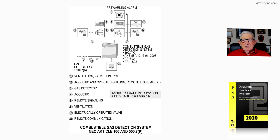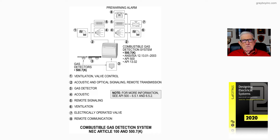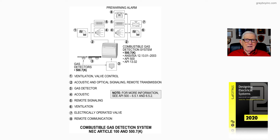These systems are used quite extensively in our industry. If you're in the oil industry, API 500 and API 13.02 address these systems in detail and their use. The ANSI standard 12.13.01 also gives you more detailed information concerning gas detection systems in combustible-type areas. NEC section 500.7k, subsections one through three, addresses where these systems can be used. You can also consult volume one of the stock electrical design book for more information about combustible gas detection systems.